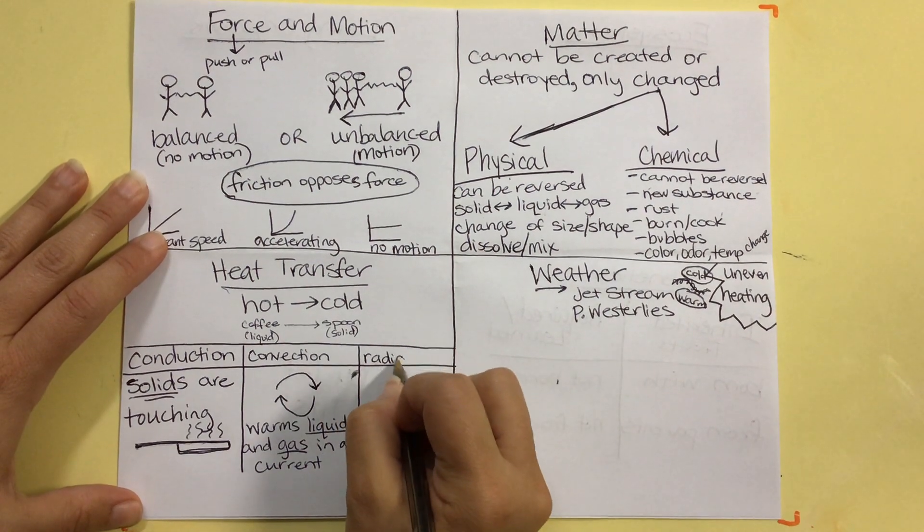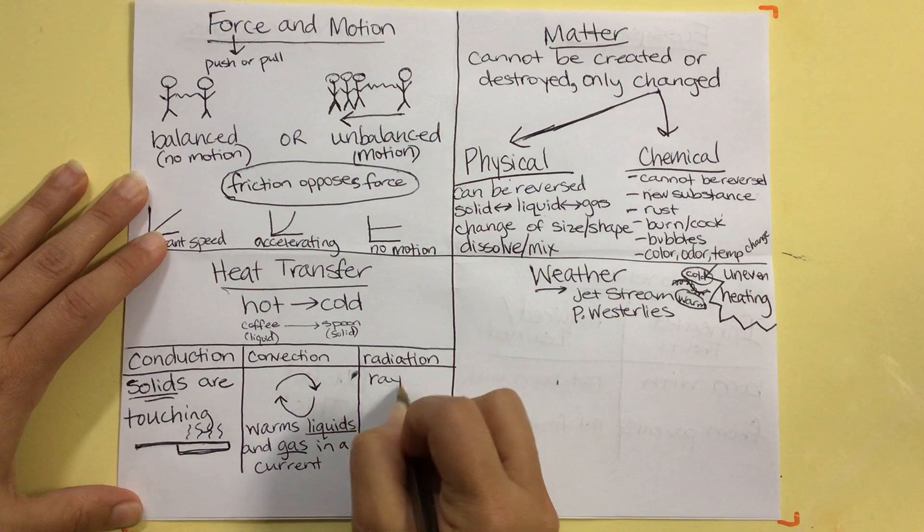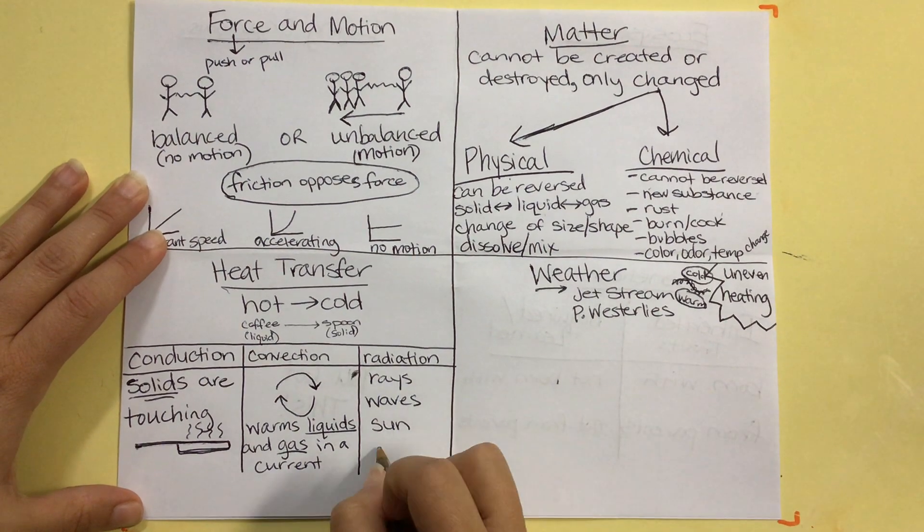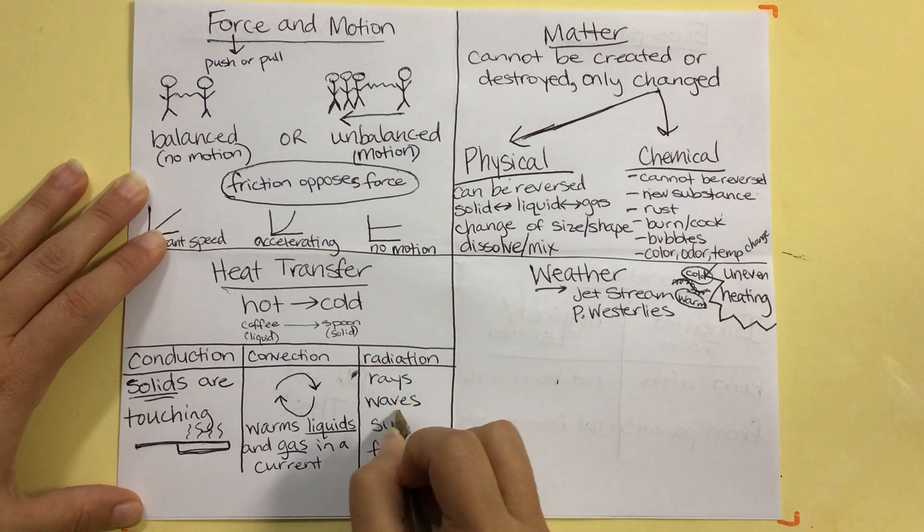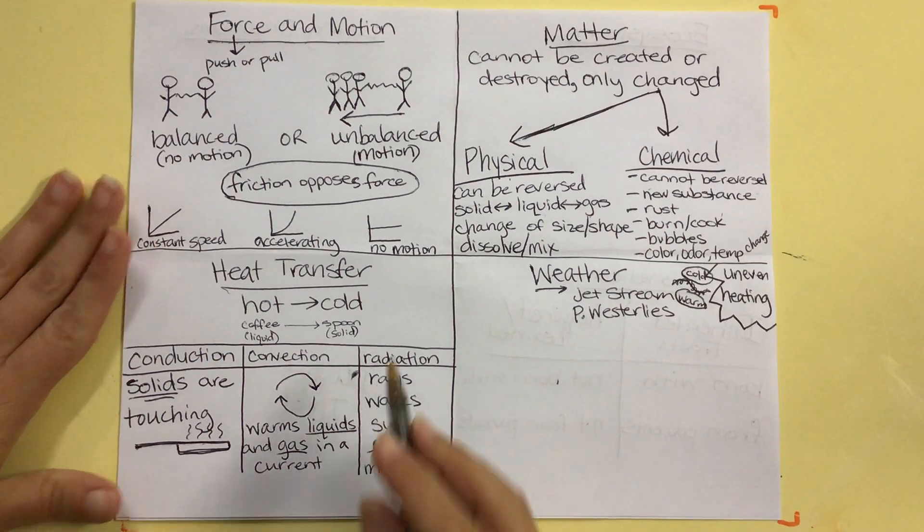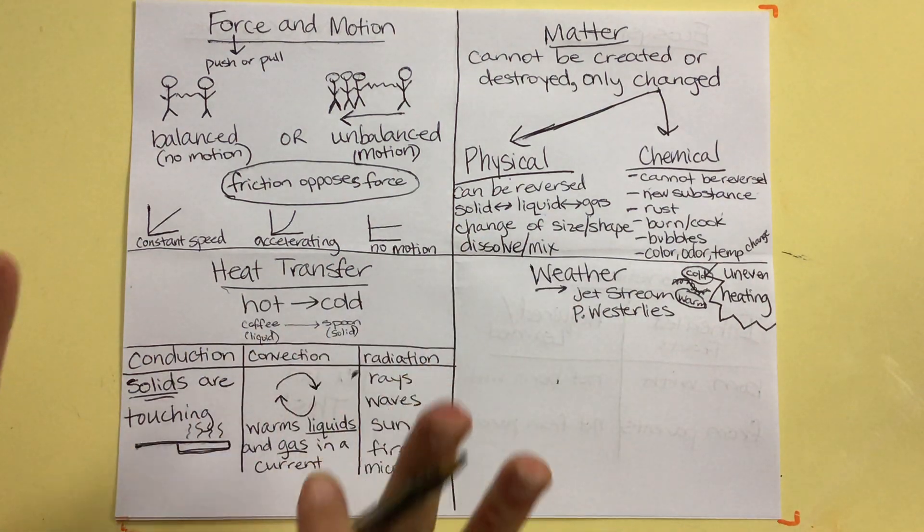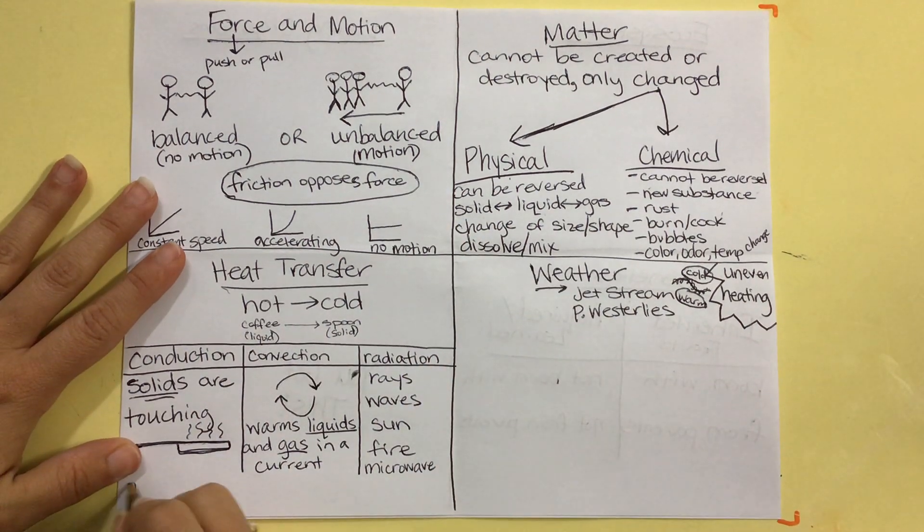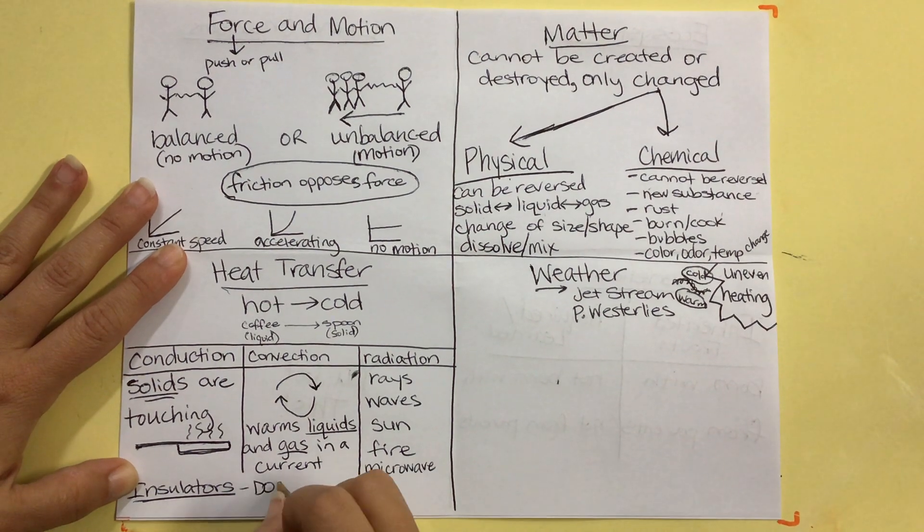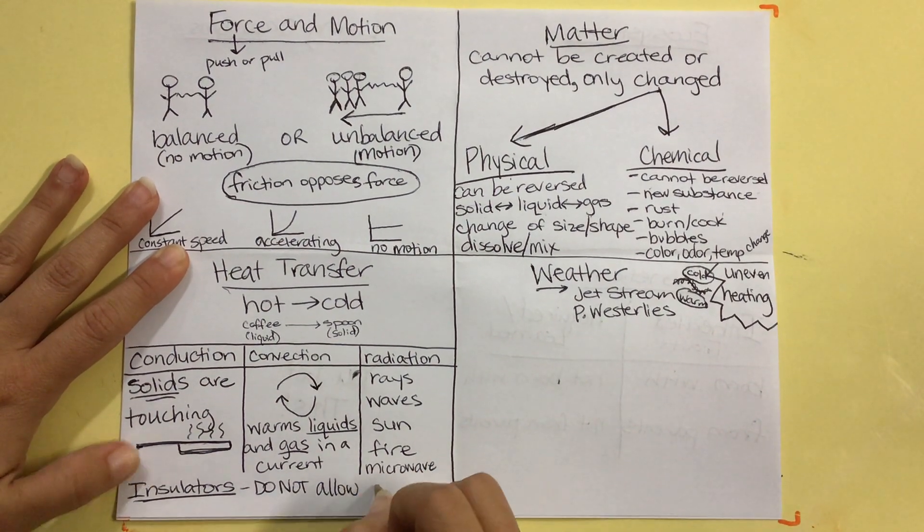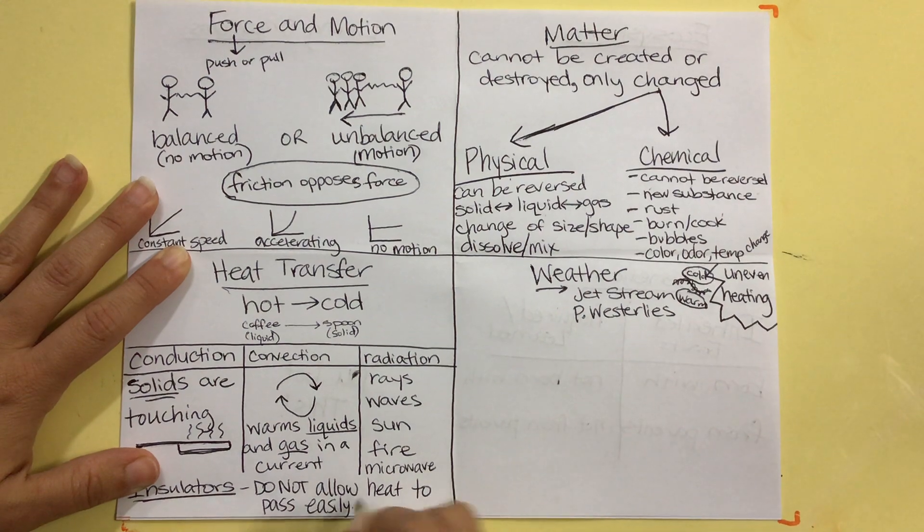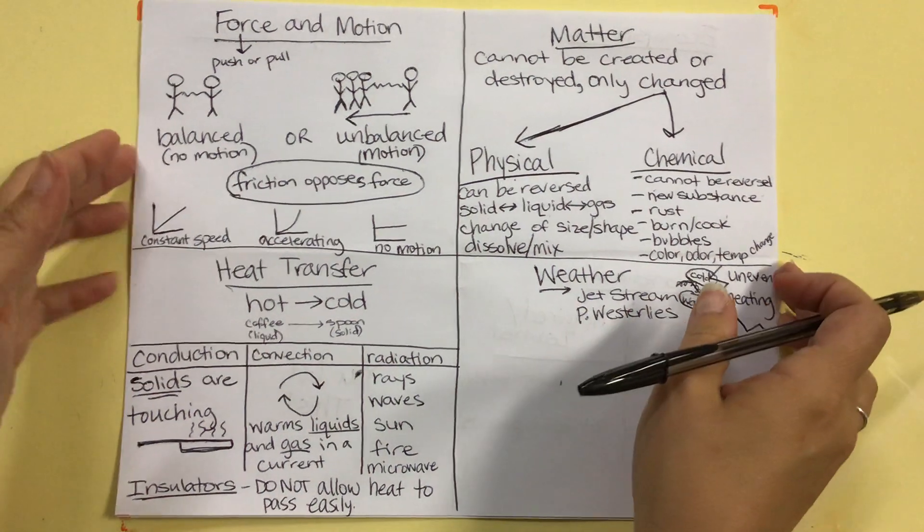Lastly, we've got radiation. That is heat transferred through rays, waves. Usually, the source of heat would be the sun, or a fire, or on the same terms as waves, we might think of a microwave. So, all of those are key terms that's going to let us know that radiation is happening. Now, heat's going to transfer freely unless it is slowed or stopped by an insulator. Okay, so, insulators do not allow heat to pass easily. Okay, so, when we think of insulators, we're going to think rubber, plastic, paper, etc.